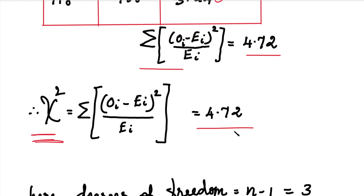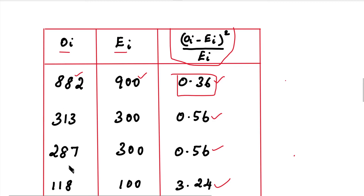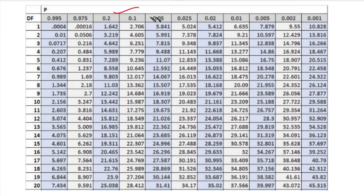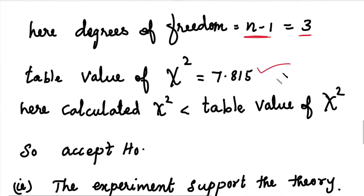The table value of chi-square depends on the level of significance and degrees of freedom. The level of significance in the question is 5 percent, that is 0.05. The degrees of freedom is n minus 1; we have 4 groups, so degrees of freedom = 4 minus 1 = 3. Looking up the chi-square table at 0.05 significance and 3 degrees of freedom, the table value is 7.815.